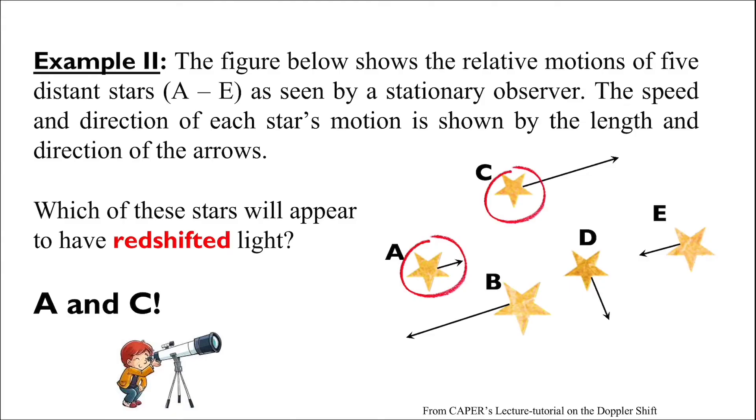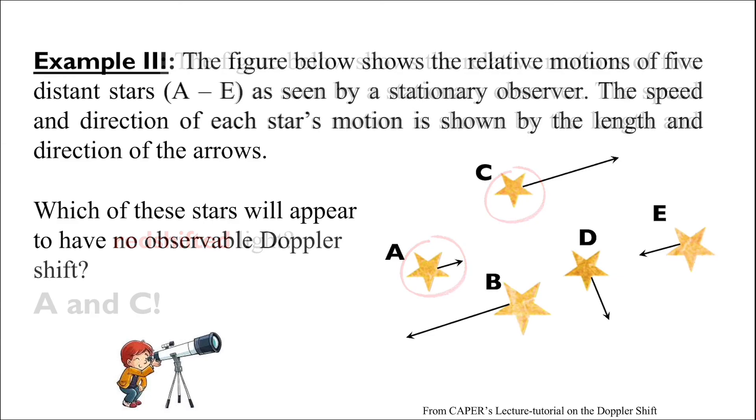Now, the last question is, which of these stars will have no observable Doppler shift? At least, according to the stationary observer. The answer is D. Star D's motion is not along the direction of the observer's line of sight. So, the observer will see no observable Doppler shift from star D.